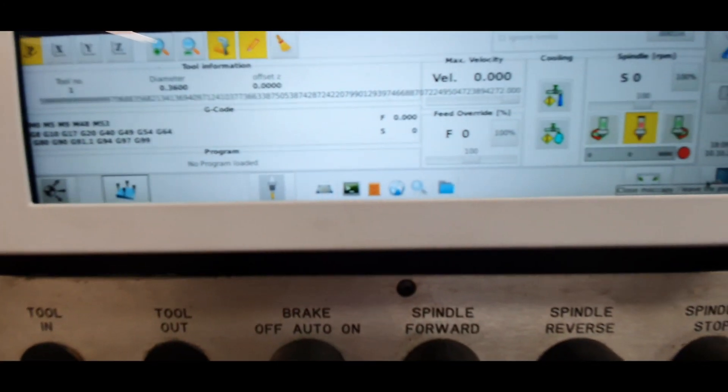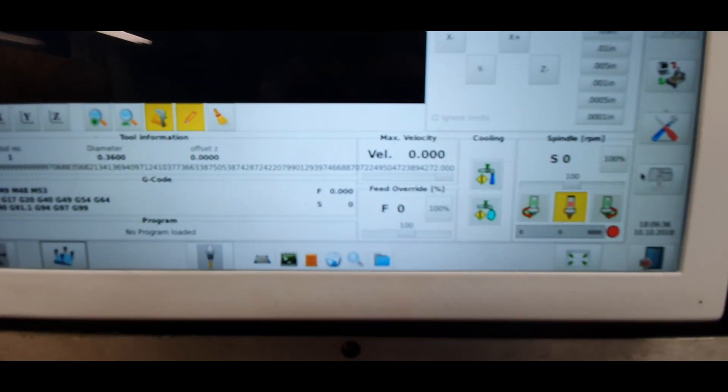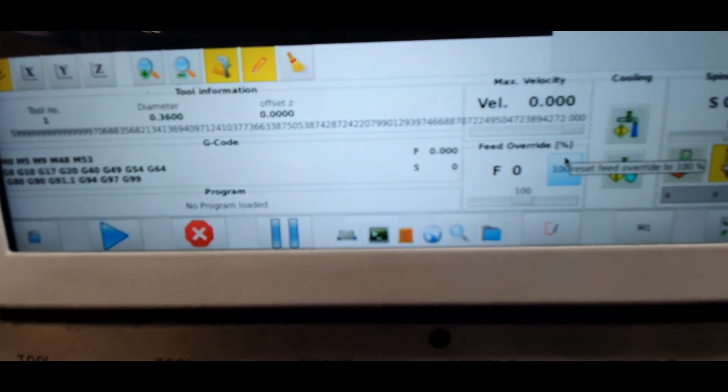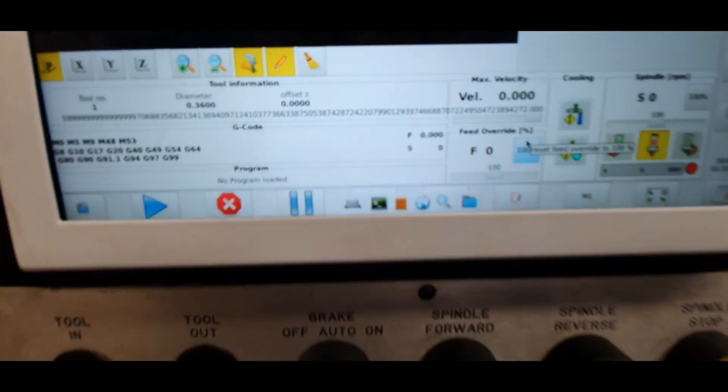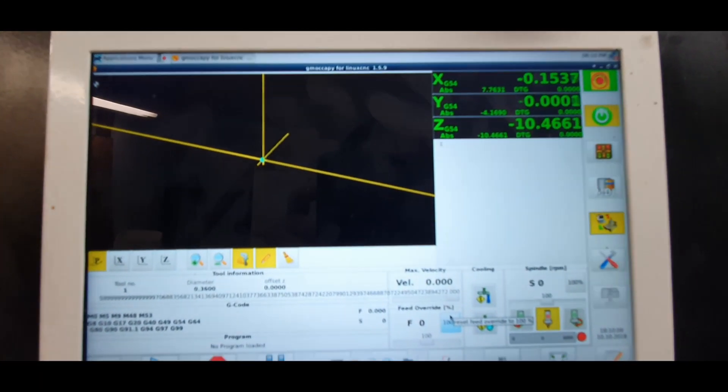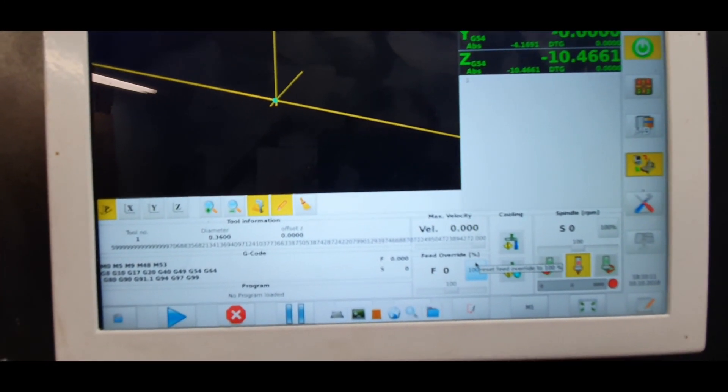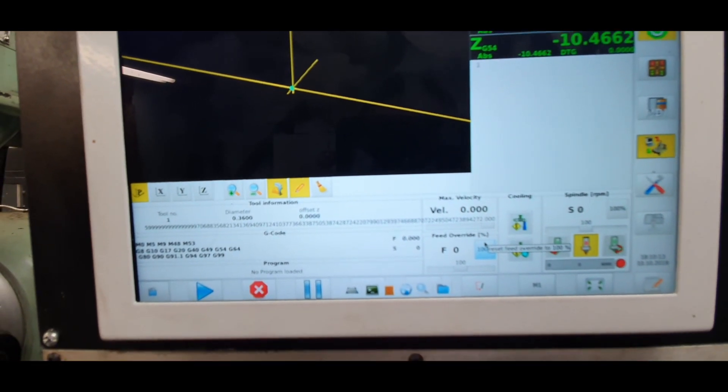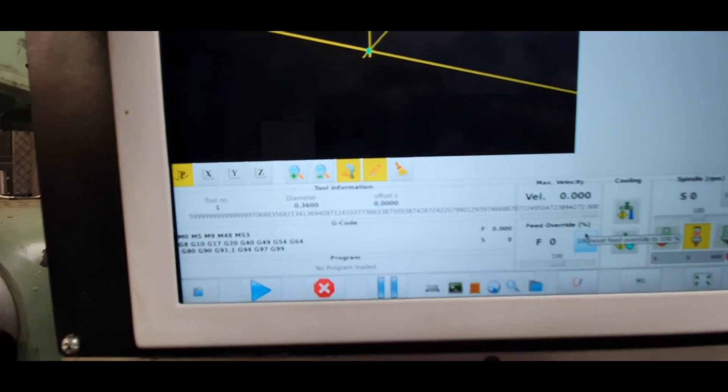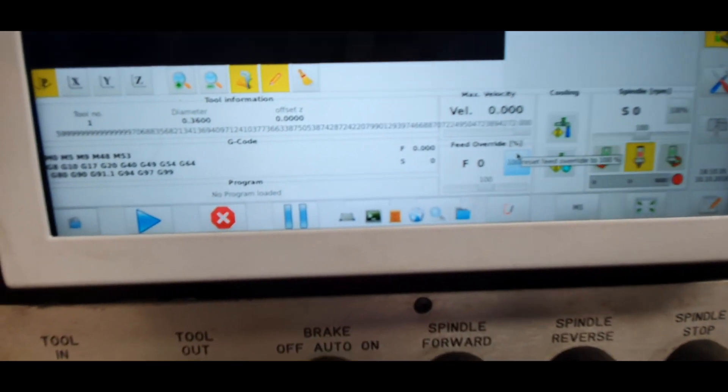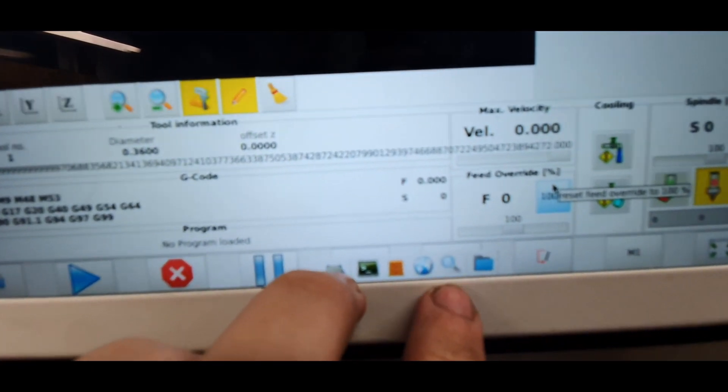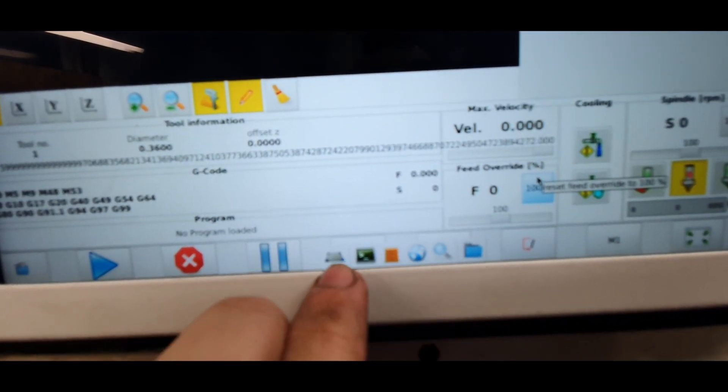But if I would go into, say, do the actual run program screen, or on an industrial machine what might be called Memory or just MEM for short, you don't have the ability. One of these is single block, the other one is start at line whatever, and they're both blocked off.